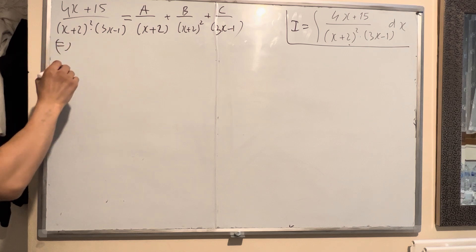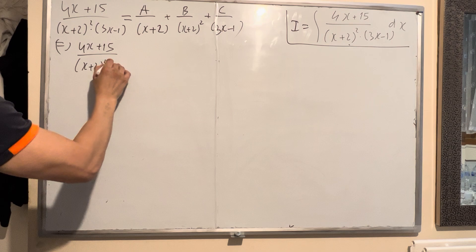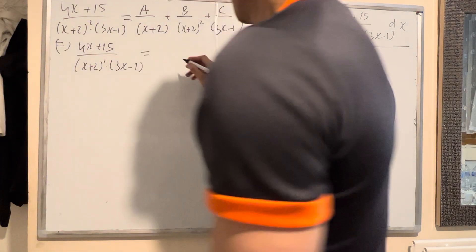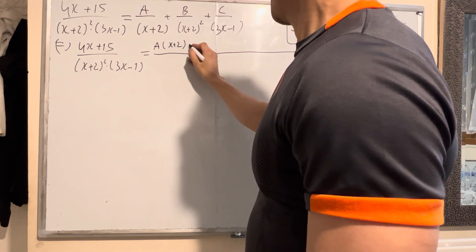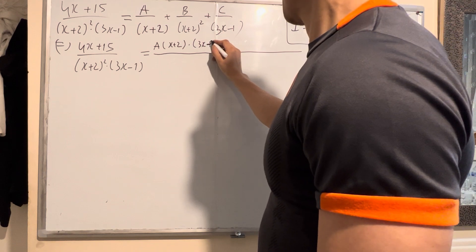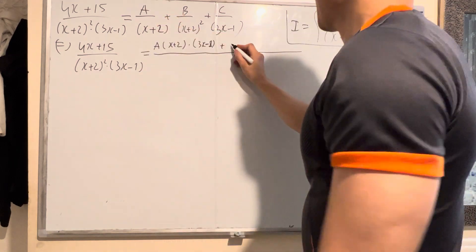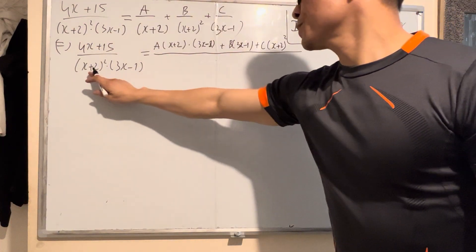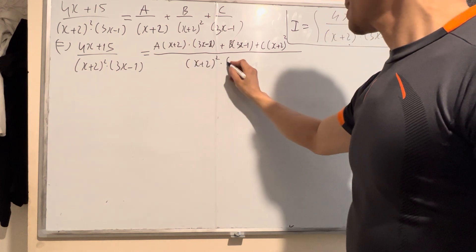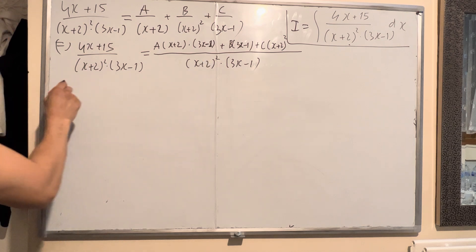So you add the three factors on the right hand side together. On the left hand side, multiply through by x plus 2 squared times 3x minus 1. On the numerator: A times x plus 2 times 3x minus 1, plus B times 3x minus 1, plus C times x plus 2 squared. Then you cancel the denominator and keep the numerator.